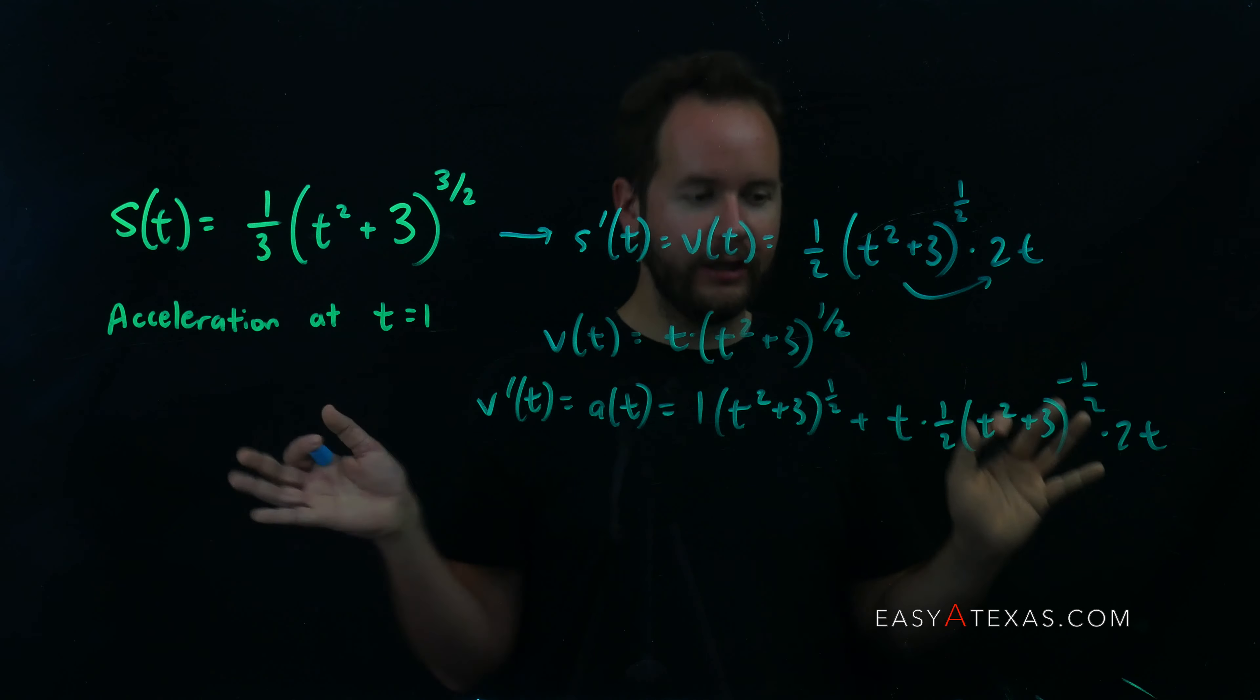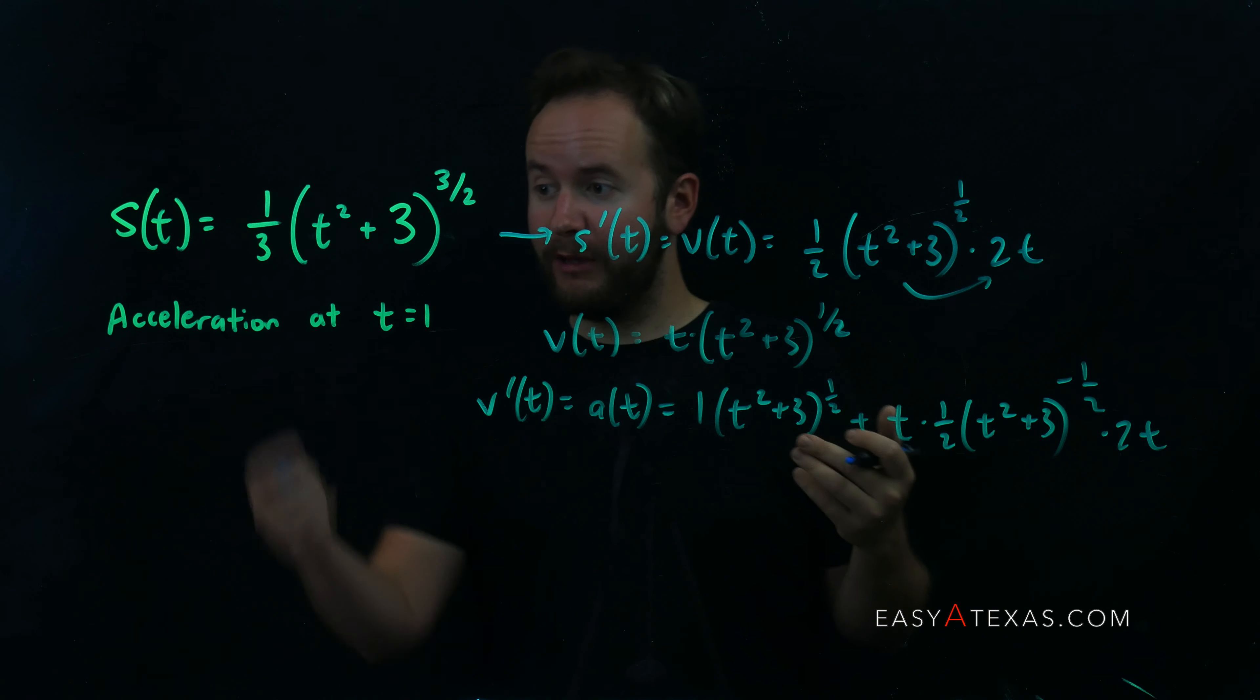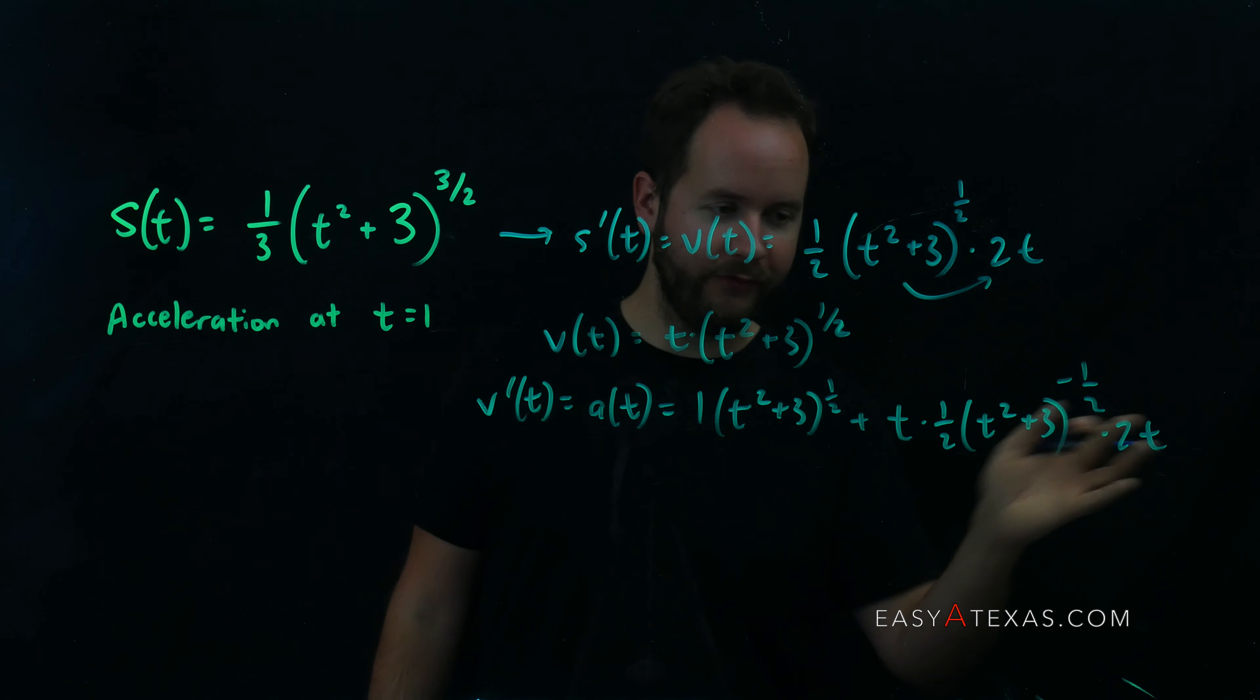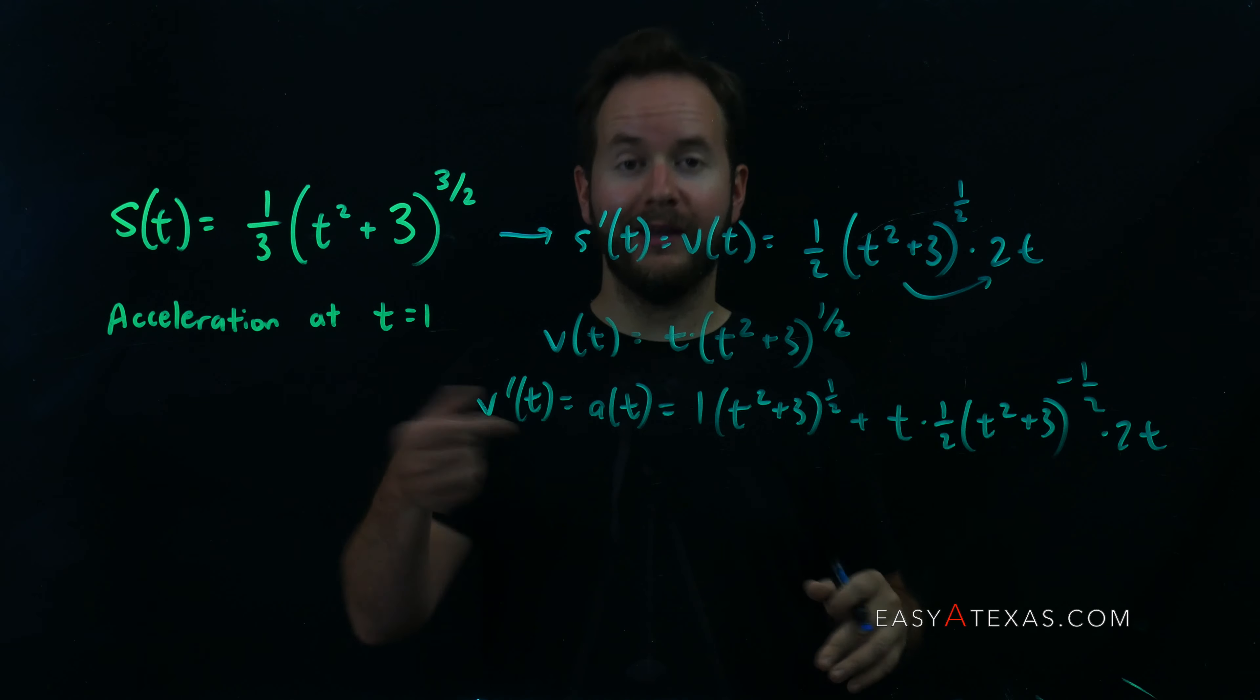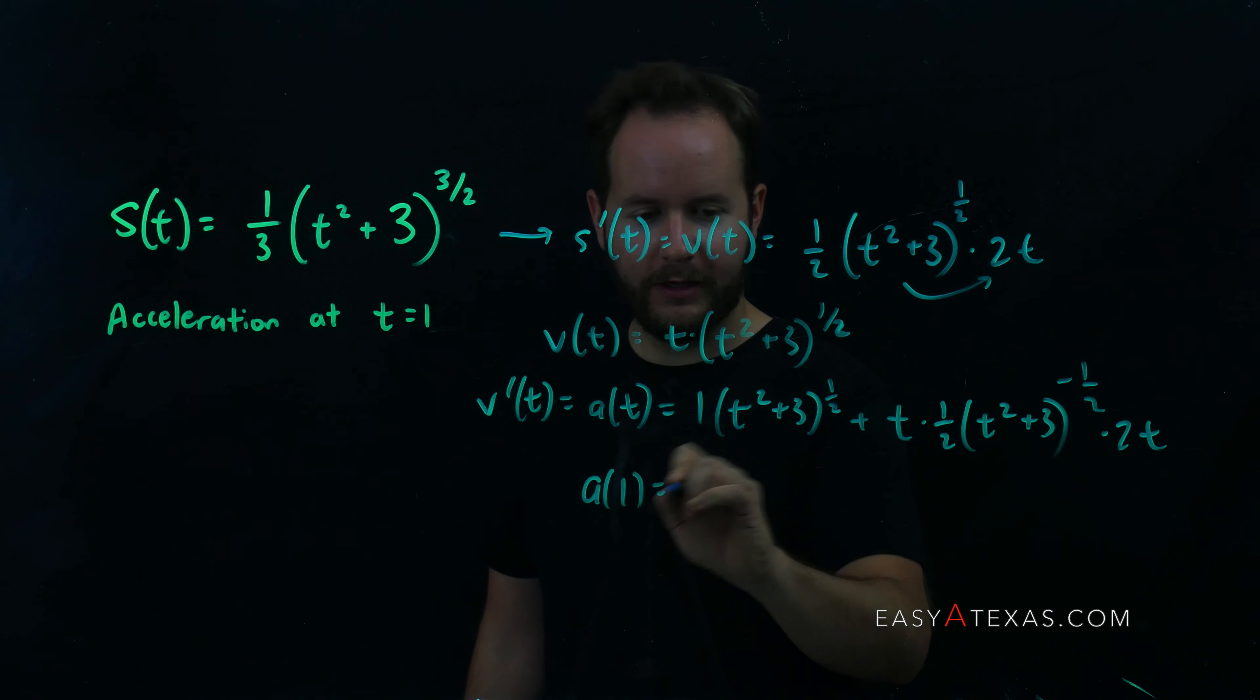Now I could simplify this, I could clean it all up, but you know what? I'm not going to do any of that. After all, my job is to plug in t equals one. So instead of simplifying in all these variables, let's just plug in one and simplify from there.